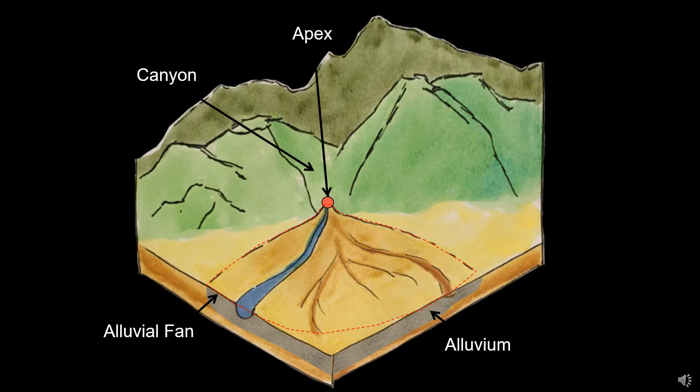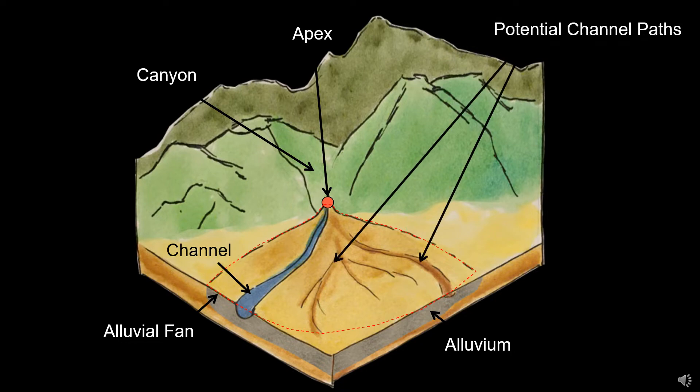After a storm, water rushing down the canyon exits into the valley and cuts a channel through the alluvium. Each time there is a flood, the water flows in a different, unpredictable direction. These potential channel paths are strewn across the fan.